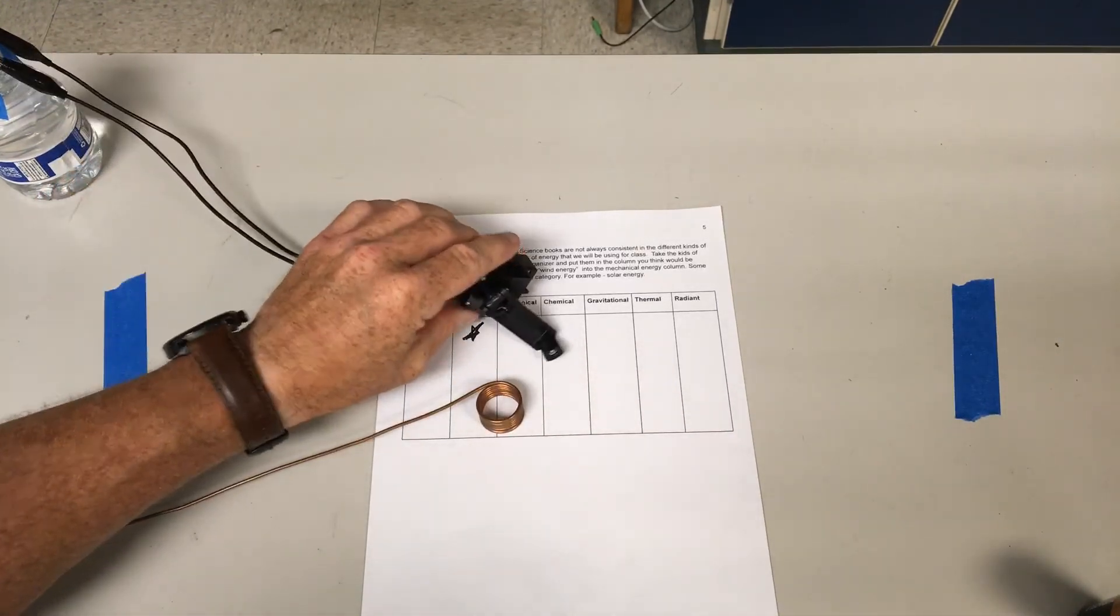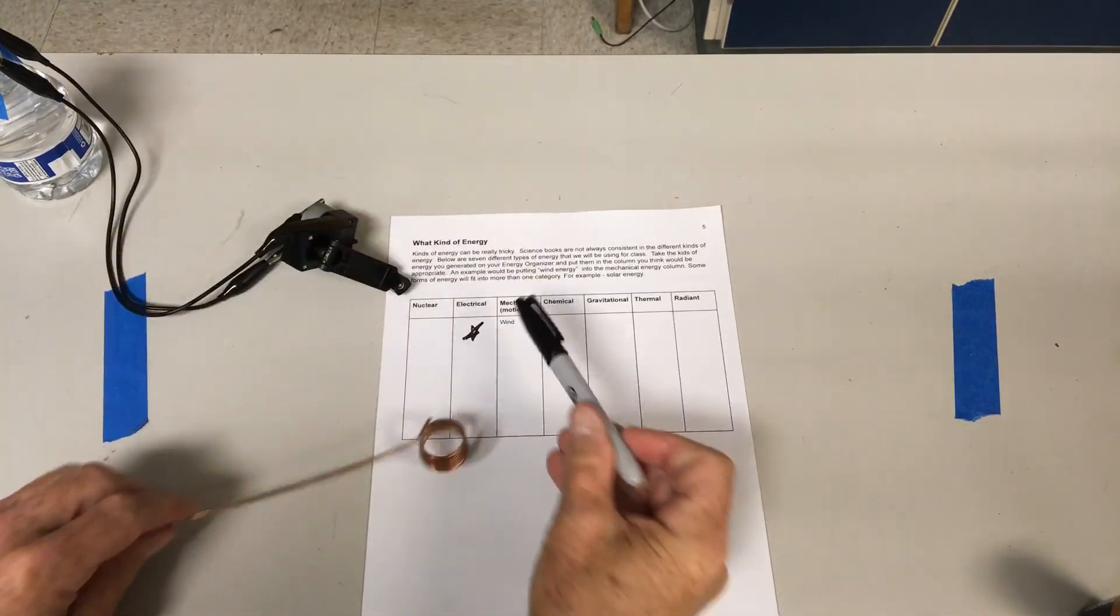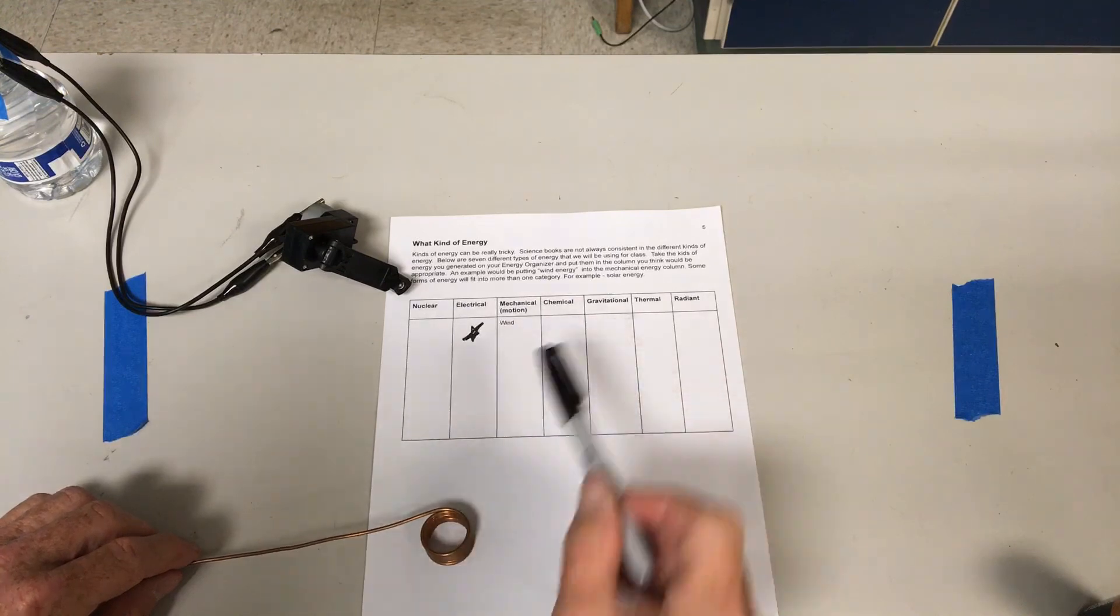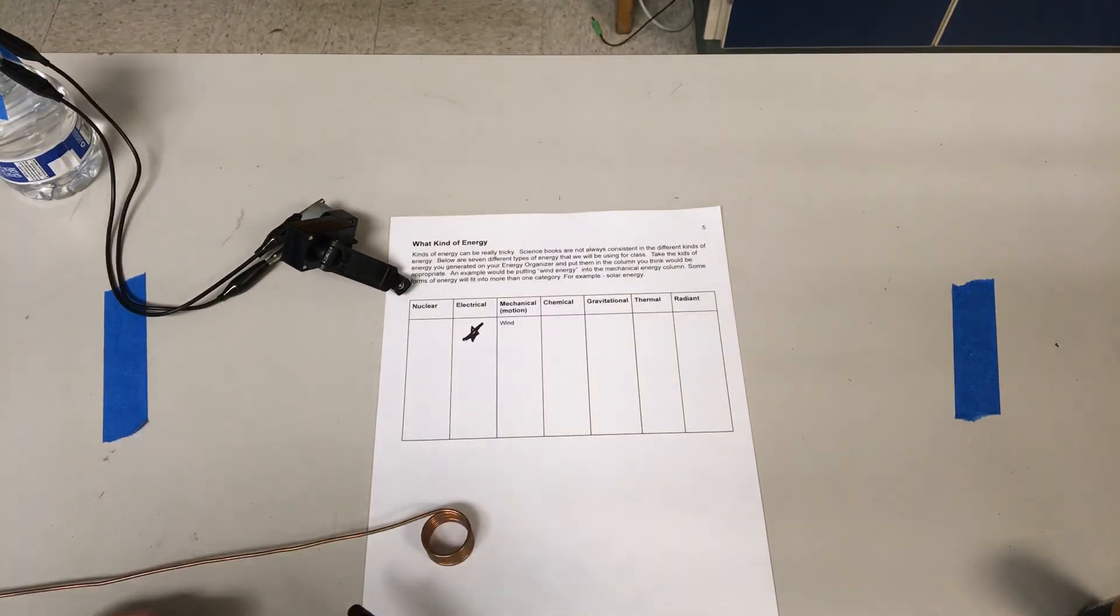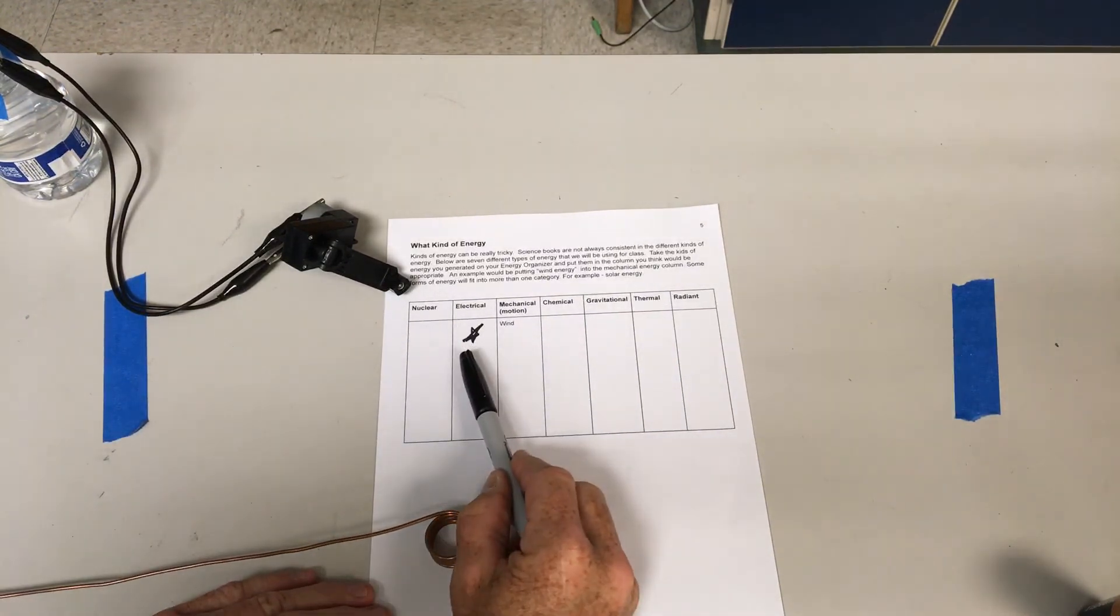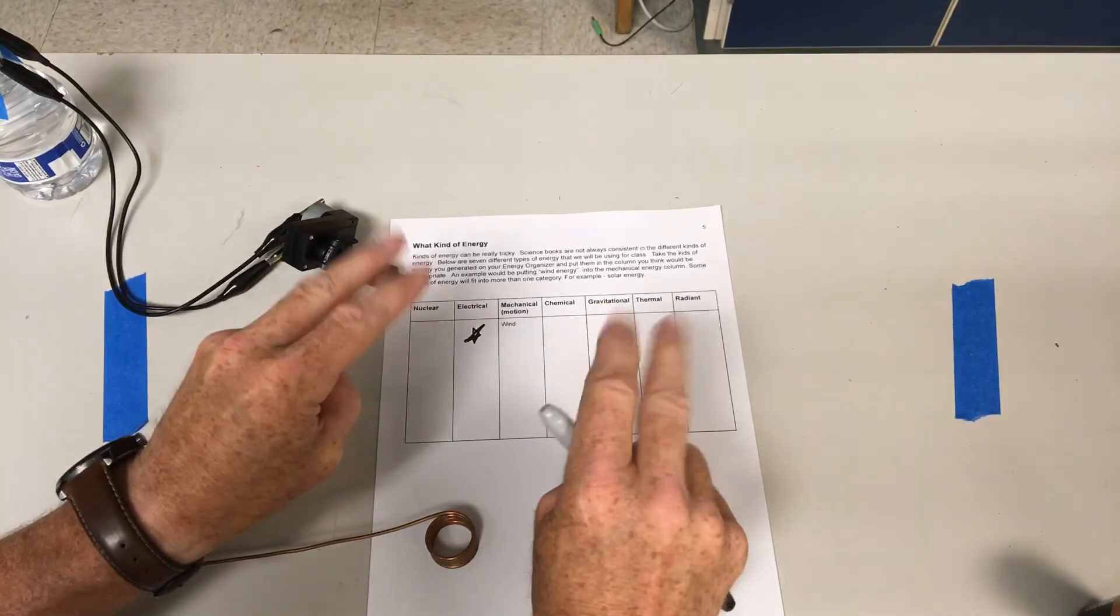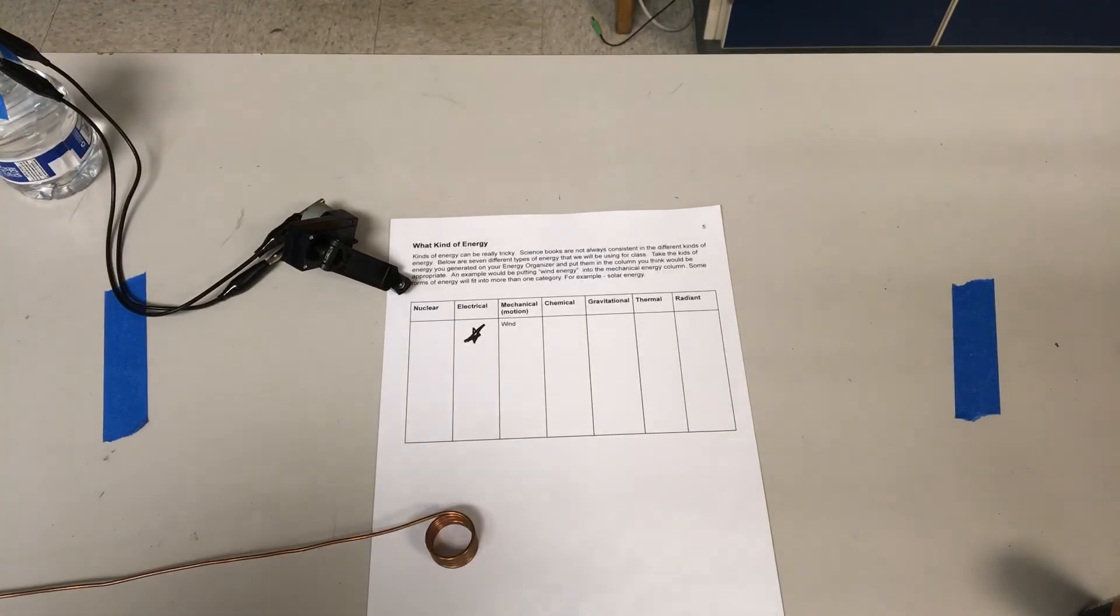The battery transforms chemical energy into electrical energy, and the Faraday method, which uses generators, transforms motion energy into electrical. We never make any kind of energy. If we want a kind of energy like electrical energy—which we want a lot of—it's got to be transformed from one of these other types of energy. Thanks for watching.